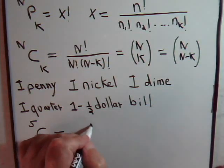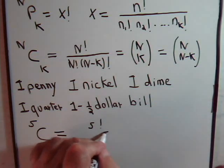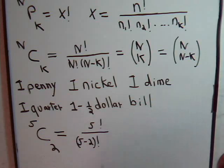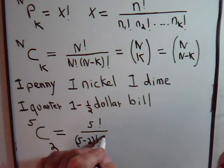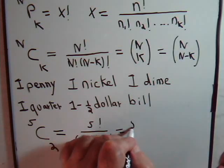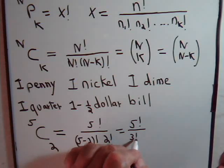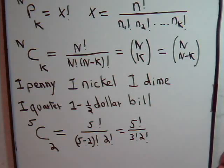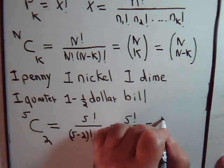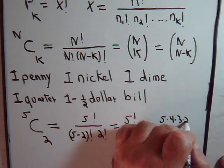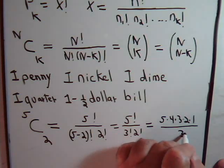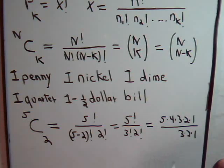So how many different ways can we do this? Of course, this is equal to five factorial divided by five minus two factorial times two factorial. So we have five factorial divided by three factorial times two factorial.